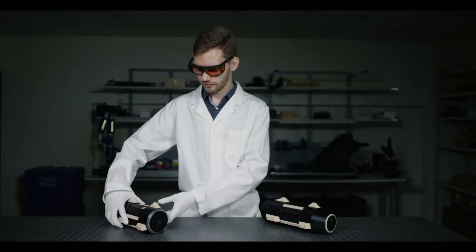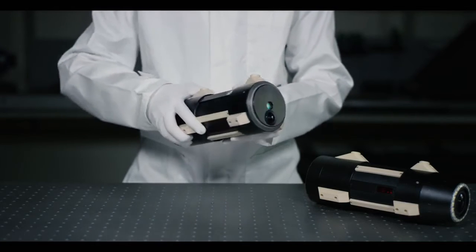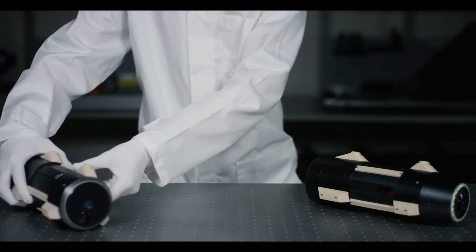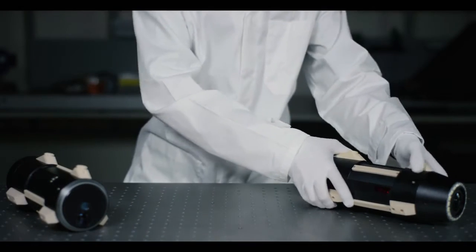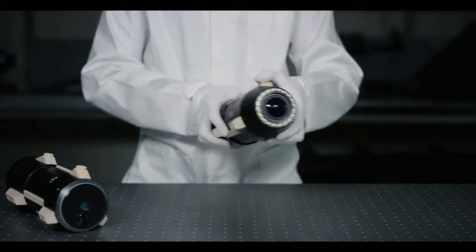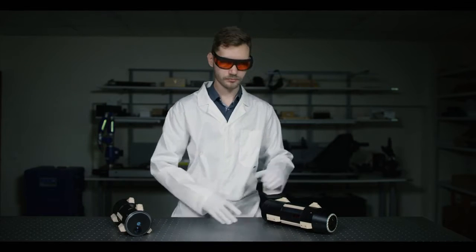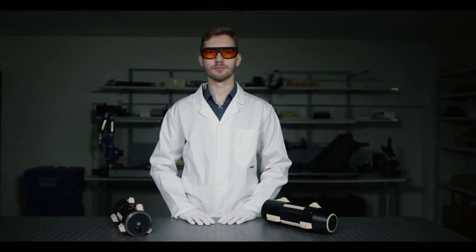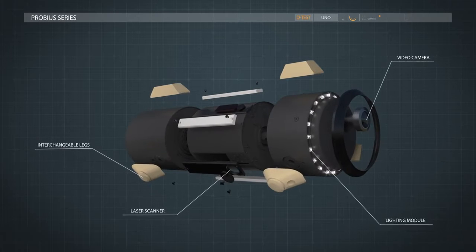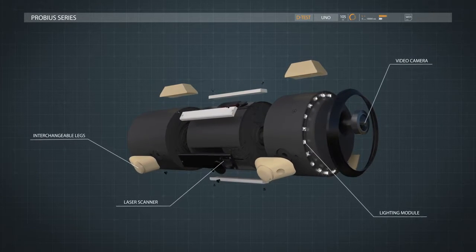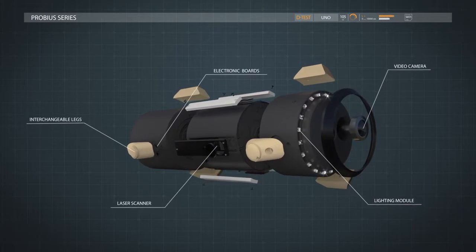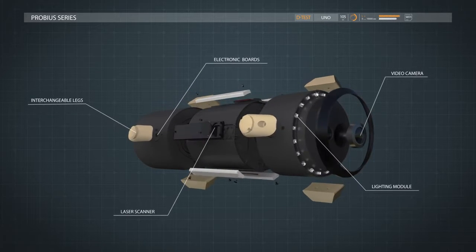Let's take a look at our system's capabilities up close, with ProBius Ultimate as an example. All systems have a module-like structure. Customers are free to pick a custom system that will suit their exact needs. Depending on the task, you can choose the internal hardware, the type of video camera and other add-ons.